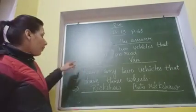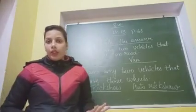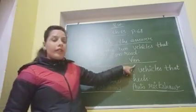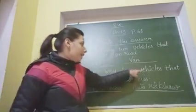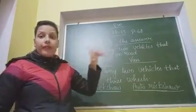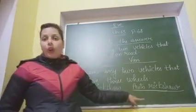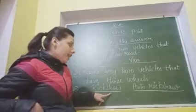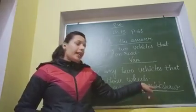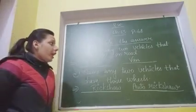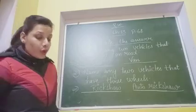So once again, listen. First one: Name any two vehicles that you see on the road. One is car — C-A-R — and another is van — V-A-N. Next: Name any two vehicles that have three wheels. Rikshaw — R-I-K-S-H-A-W — and Auto Rikshaw — A-U-T-O R-I-K-S-H-A-W. Rikshaw and Auto Rikshaw are two vehicles that have three wheels.